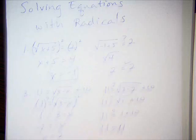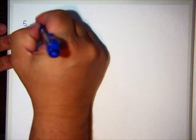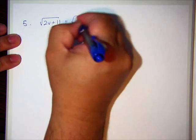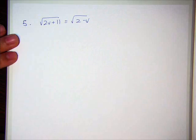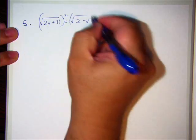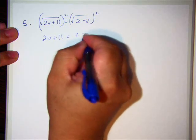In the next problem, we have a radical on both sides. It may actually look more complicated, but number 5 actually turns out rather nicely. Okay. I'm going to square both sides. When I square both sides, I get 2v + 11 = 2 - v.